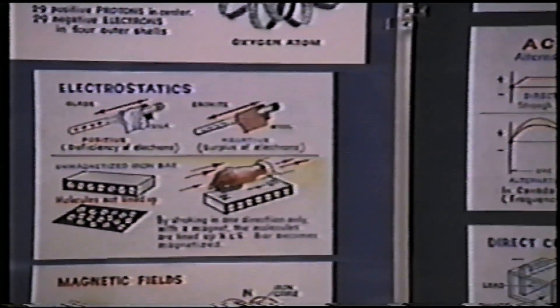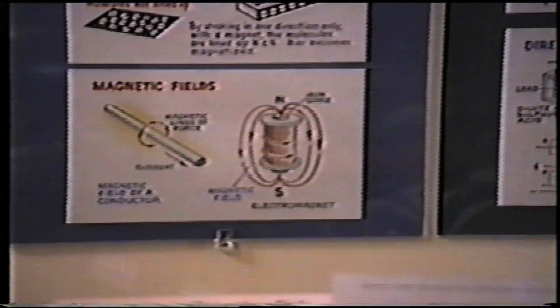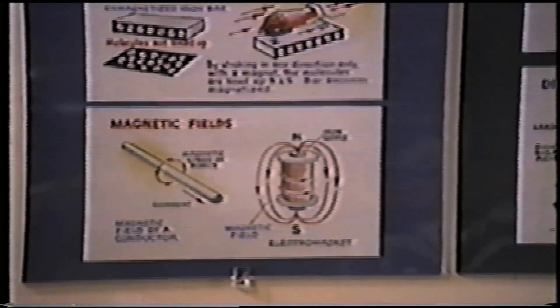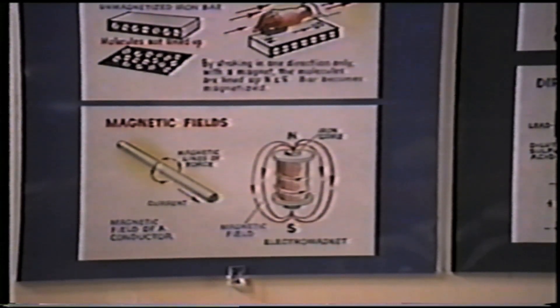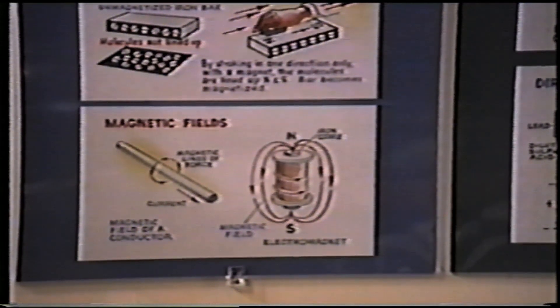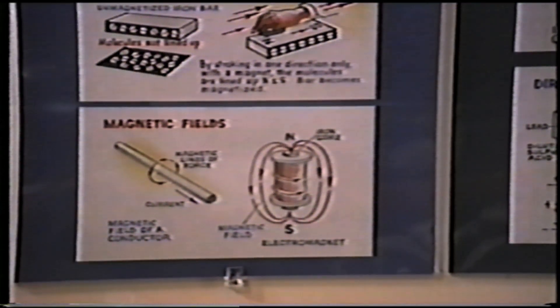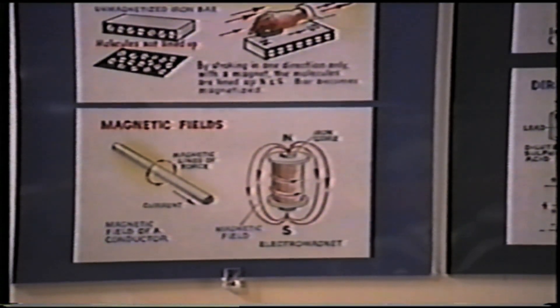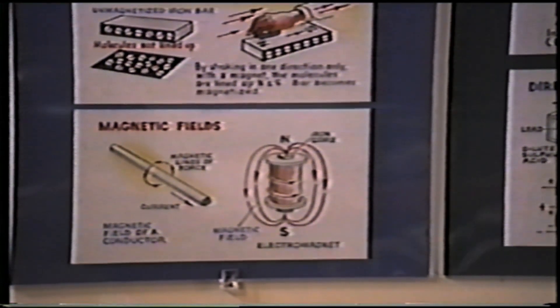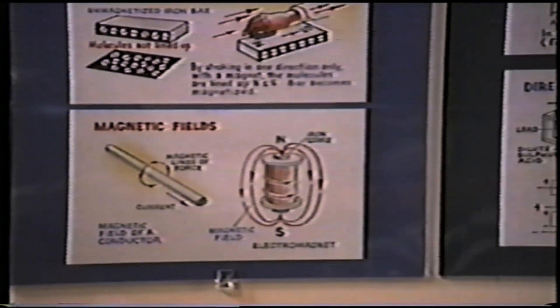A magnetic field can be produced from a magnet, or produced by an electric circuit flowing in a coil of wire. Conductors are rotated in this magnetic field, and each time a conductor passes the pole of a magnet, the current will rise. This is alternating current, and is the normal current used by electrical utilities.